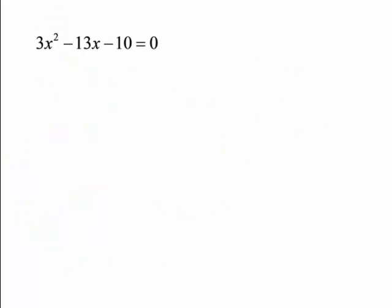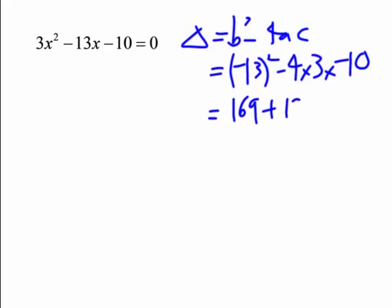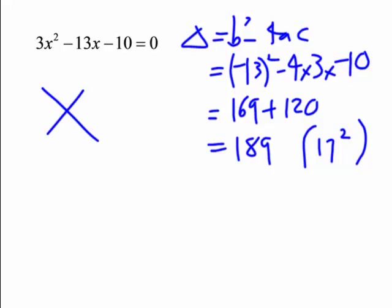Let's look at another one. We're not sure whether we can factor it, so let's check delta. Delta equals b squared minus 4ac. In this case it's minus 13 squared minus 4 times 3 times minus 10, which is 169 plus 120. We need to check whether that's a perfect square.